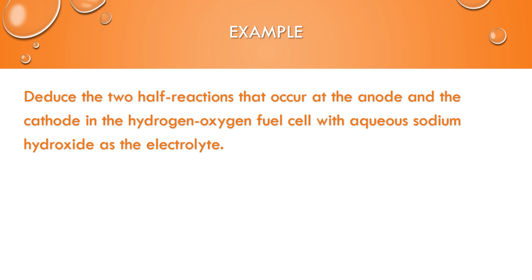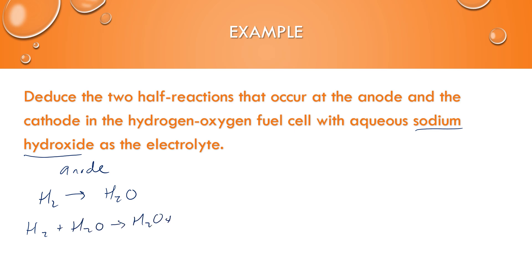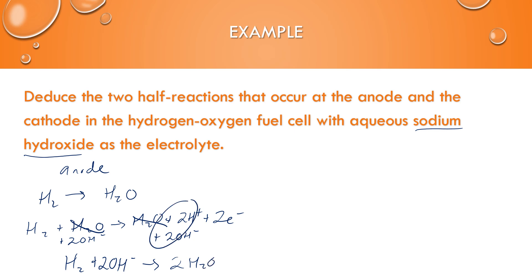For this example, we need to find the half reactions for the anode and cathode of a hydrogen-oxygen fuel cell with aqueous sodium hydroxide as the electrolyte. Always pay attention to the electrolyte — it could be acidic or basic conditions. At the anode, hydrogen gas is converted into water. To balance, we use a water molecule, two hydrogen ions, and two electrons so the charge cancels out and we have four total hydrogens on both sides. The waters cancel, and because it's a basic solution, we add two hydroxide ions to both sides, giving H₂ + 2OH⁻ → 2H₂O + 2e⁻.